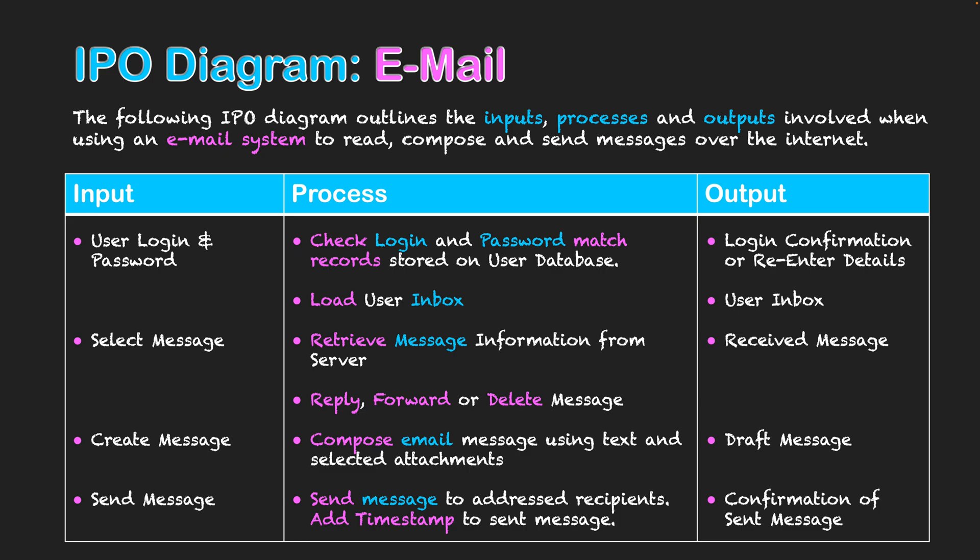The output at this stage is a confirmation sent to the user saying the message has been successfully sent. That finalizes this process. This IPO diagram gives an understanding of how an email system works at a basic level — it obviously gets more complex, but these are the core stages.